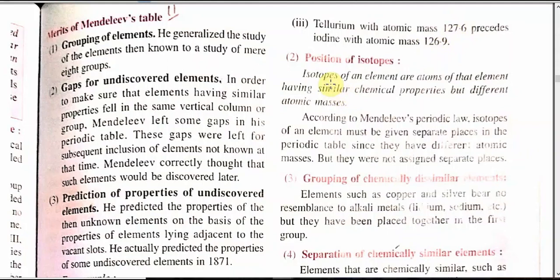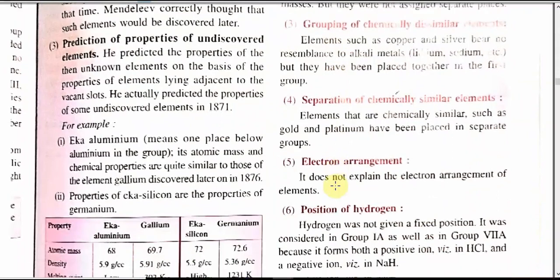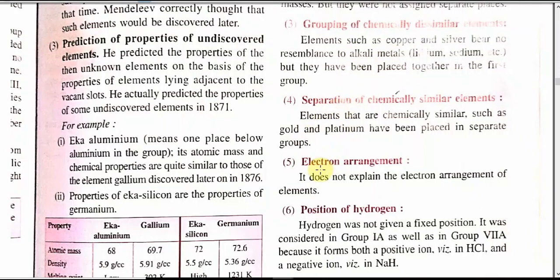Second defect: position of isotopes. Isotopes are atoms of an element having similar chemical properties but different atomic masses. According to Mendeleev's periodic law, isotopes should be given separate places. Third defect: grouping of chemically similar and dissimilar elements — copper and silver bear no resemblance to group 1 alkali metals but have been put together. Fourth: separation of chemically similar elements — gold and platinum were placed in separate groups, but they have many similarities. Mendeleev's table also does not discuss electronic arrangement, since that is based on atomic number.